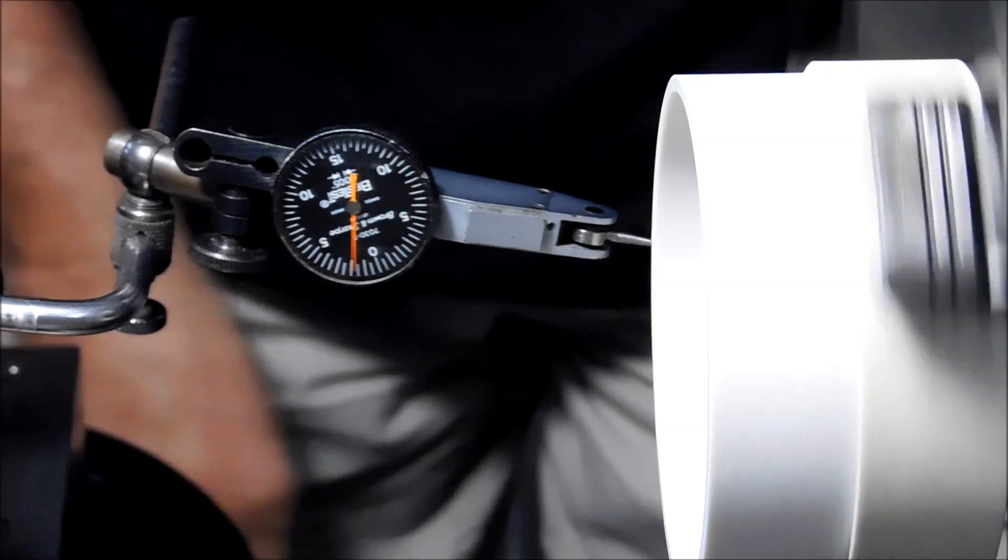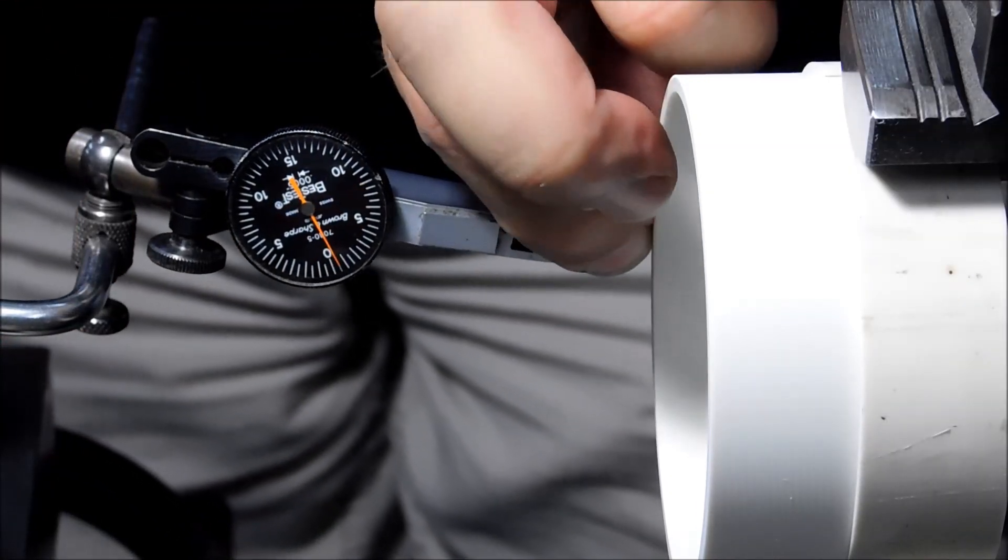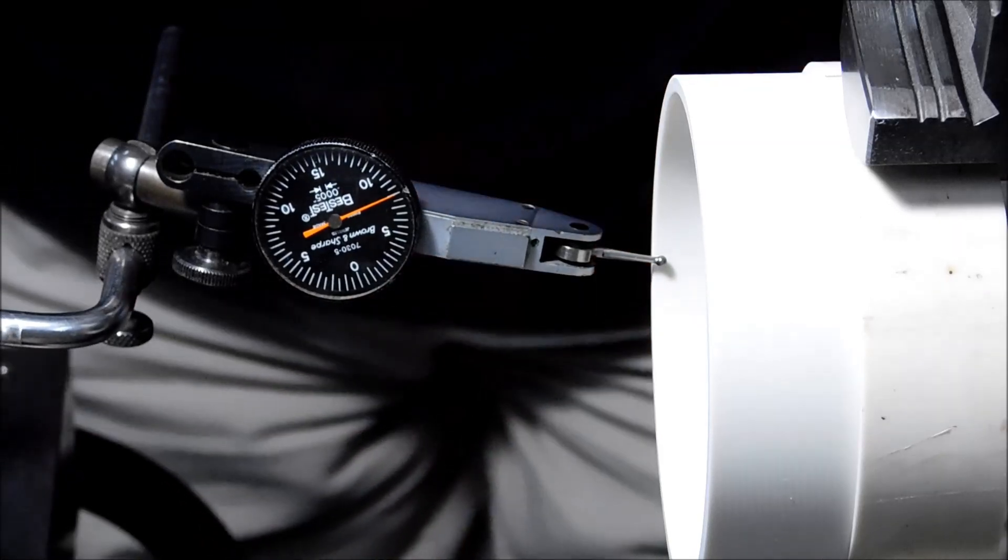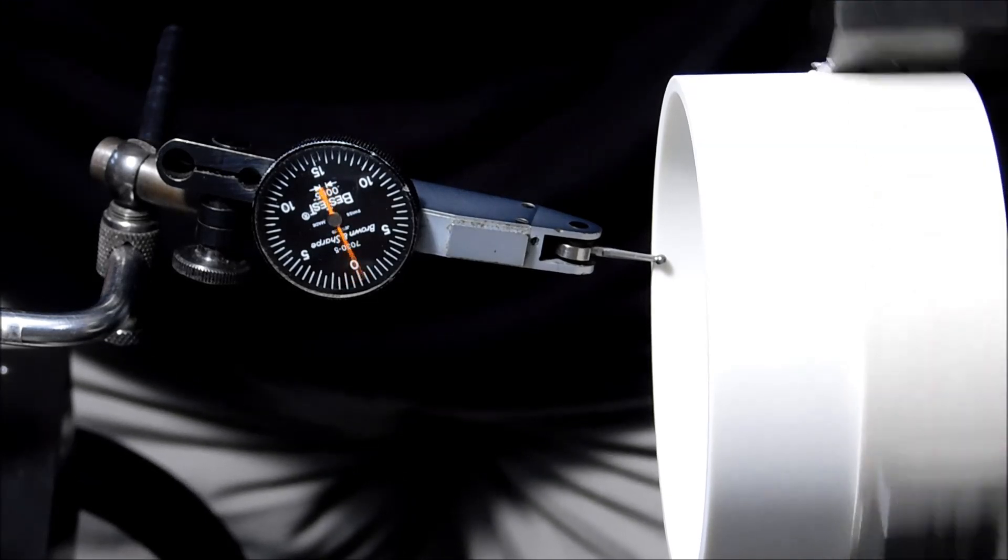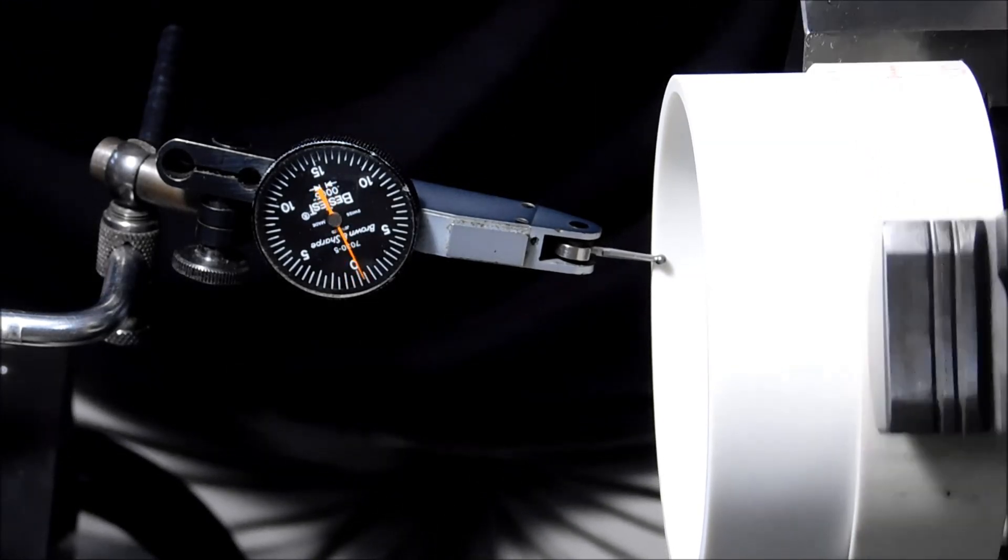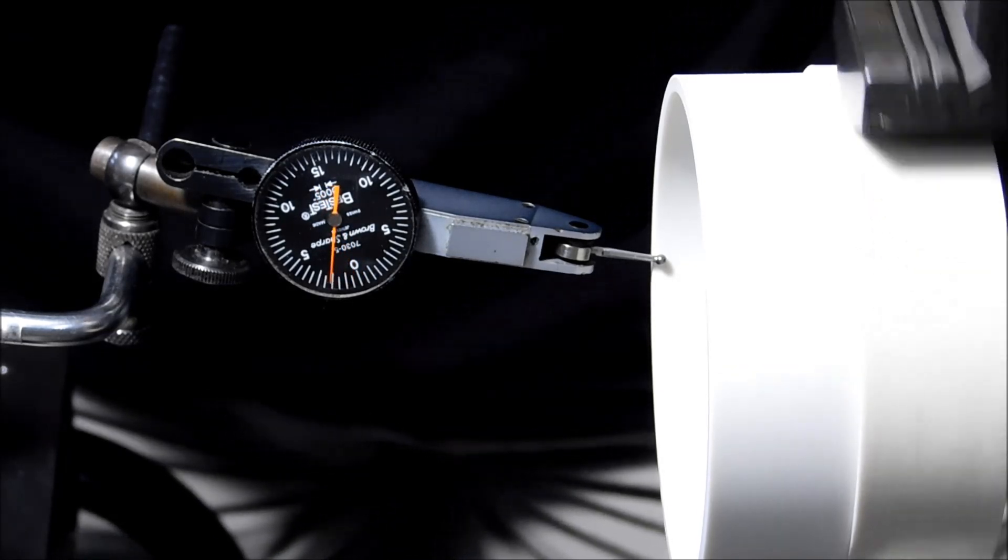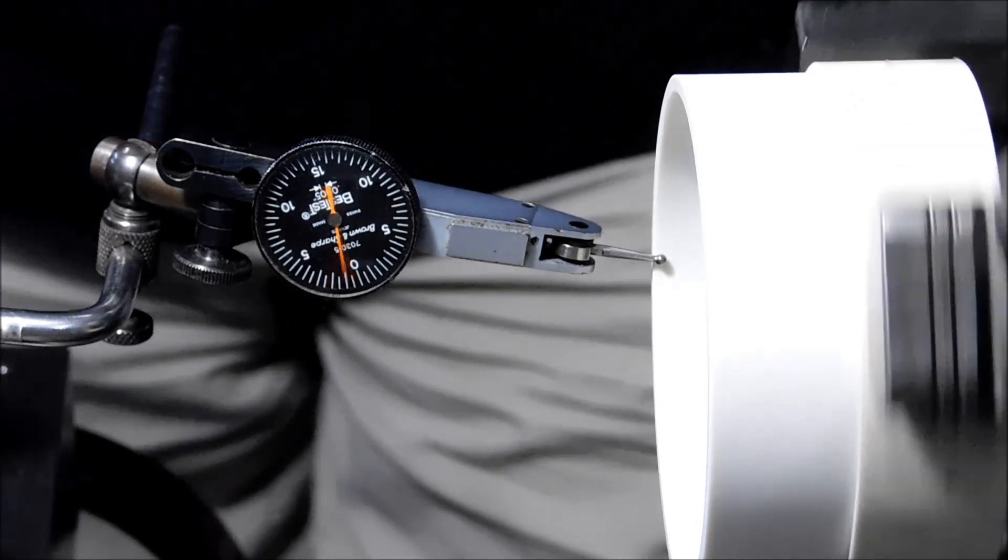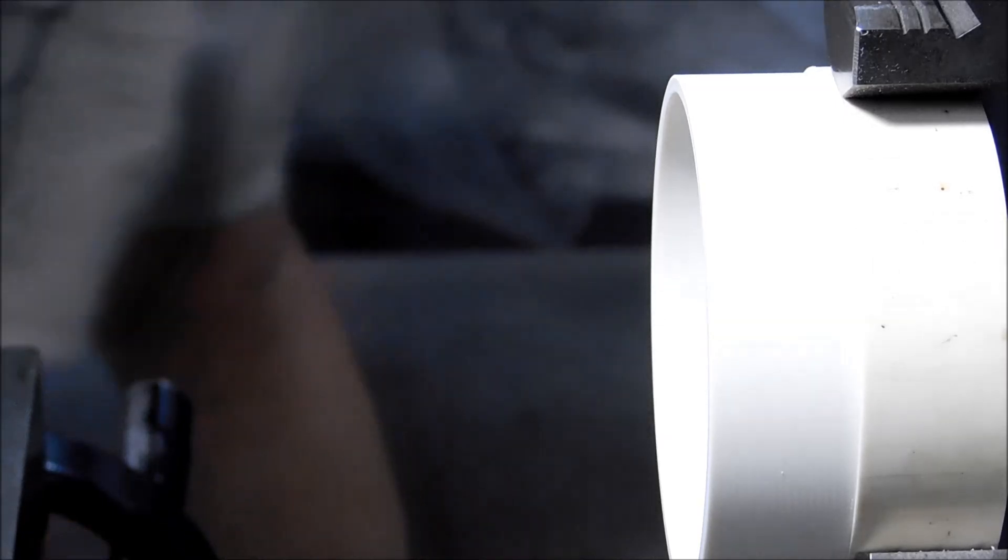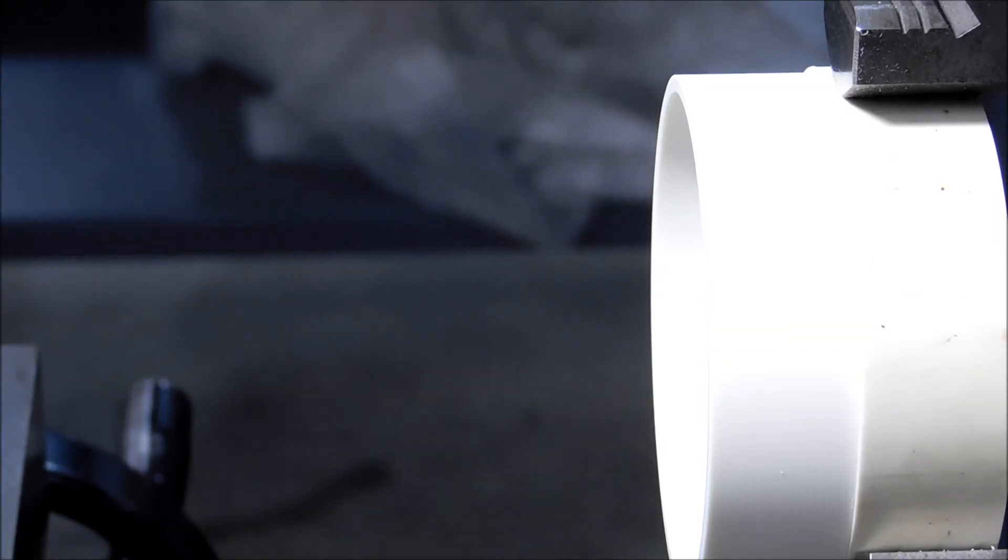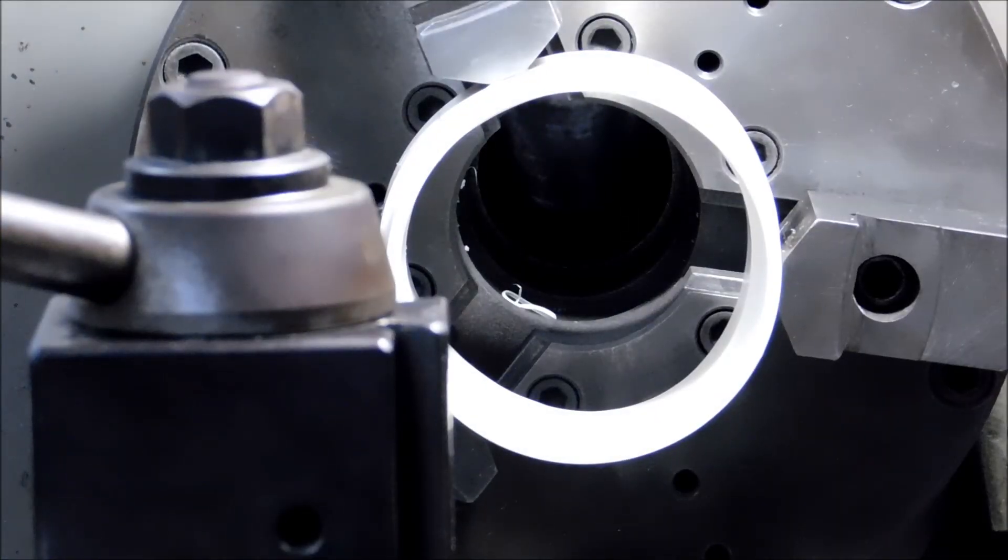I slowed the RPM down on that pass because if this material is starting to whip out because it's thin I did not want that to affect the geometry. Let's check it again. Alright that's more like it. We're just going to have to accept that this material is alive and is going to move as you cut it. Let's call that 2,000ths out of round. 2,000ths total indicator reading.